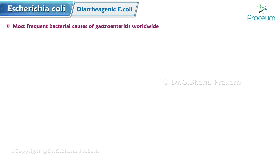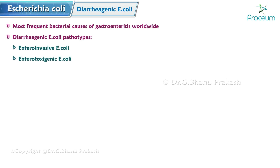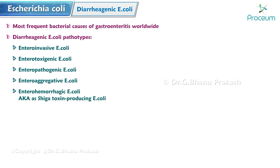Diarrheagenic E. coli are among the most frequent bacterial causes of gastroenteritis worldwide. The diarrheal illness pathotypes include: Enteroinvasive E. coli (EIEC), Enterotoxigenic E. coli (ETEC), Enteropathogenic E. coli (EPEC), Enteroaggregative E. coli (EAEC), and Enterohemorrhagic E. coli (EHEC), which is also known as Shiga toxin-producing E. coli (STEC).